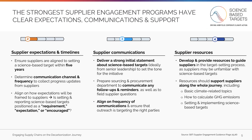Once the team is set, the next step is to set your suppliers up for success by outlining clear expectations, instituting strong communications, and developing resources to support them. First, you must define supplier expectations and timelines. You should communicate to your suppliers that they should set their science-based target within five years. Further, you should define the channel and frequency with which suppliers should communicate progress updates. Finally, you should align on how to frame the expectations for your suppliers.